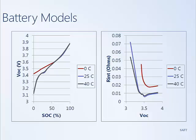Here are two graphs showing how some parameters of a battery may change over time. The graph on the left shows how open circuit voltage changes with state of charge — you can see it varies quite a bit, from about 3.1 volts to almost 4 volts. You can also see variation with temperature: there are three different traces for 0°C, 25°C, and 40°C. The graph on the right shows how the internal resistance of a battery may change with open circuit voltage, and again with temperature. As stated, if the parameters are changing slowly it may be appropriate to treat them as constants or as time-invariant.